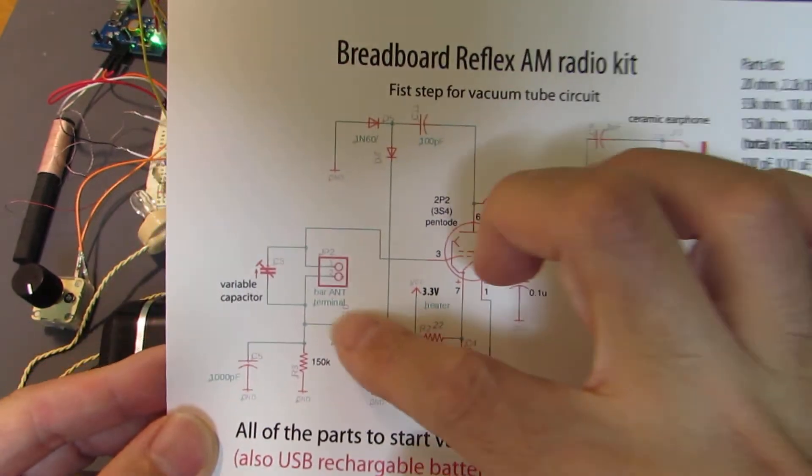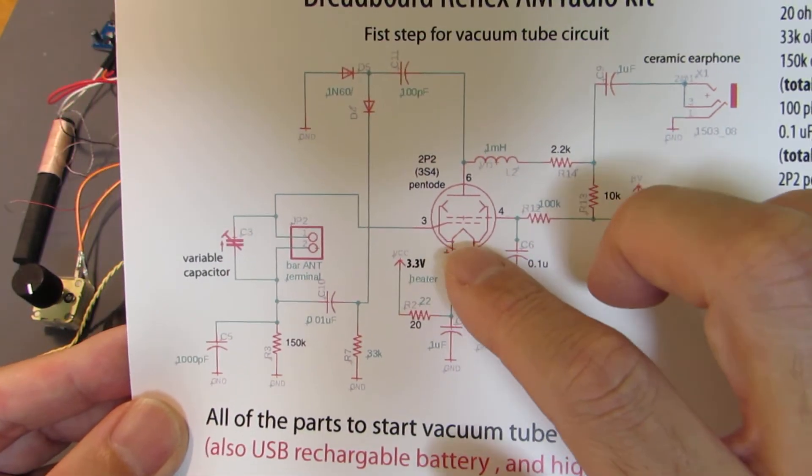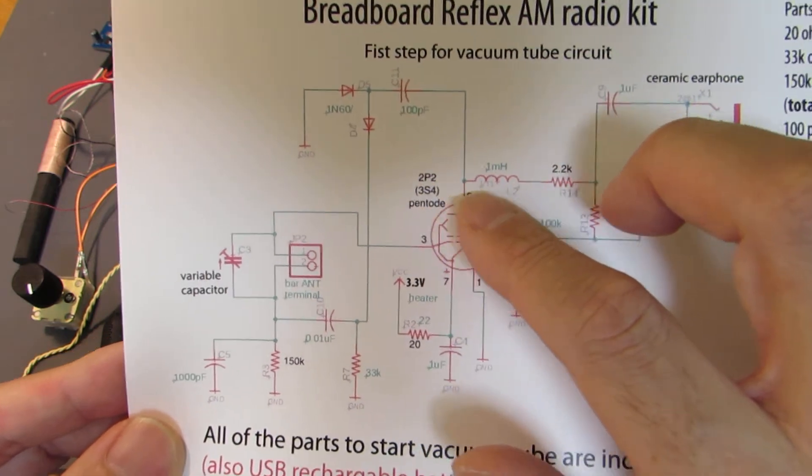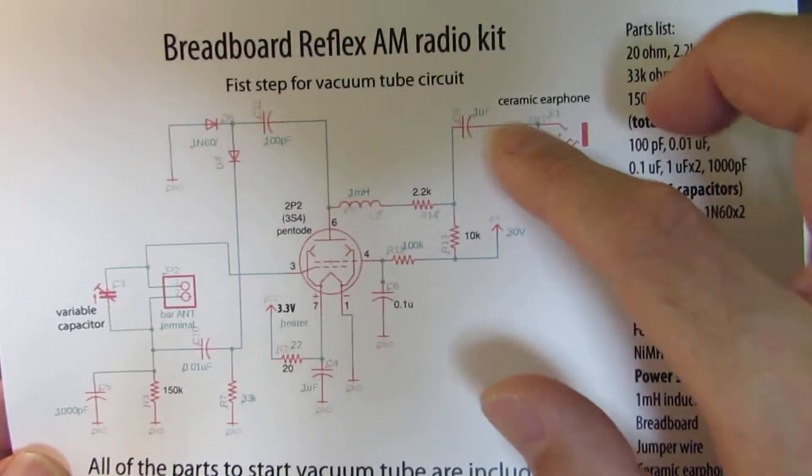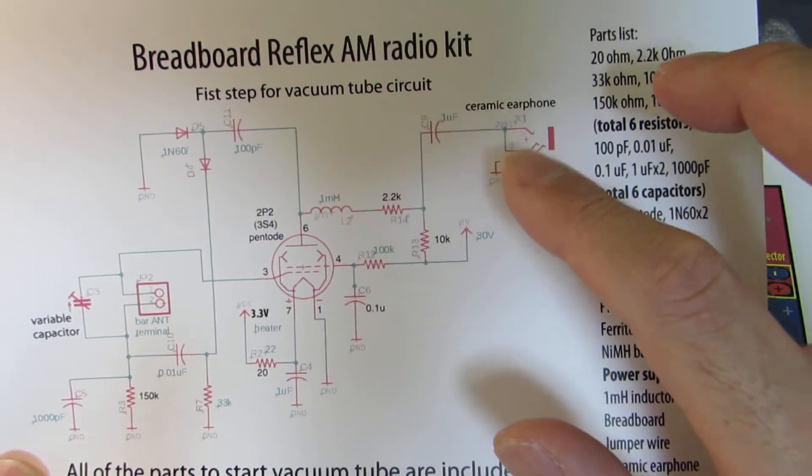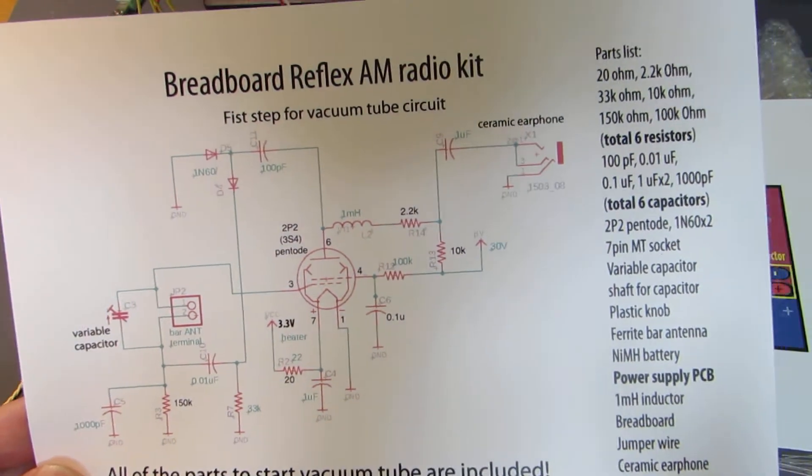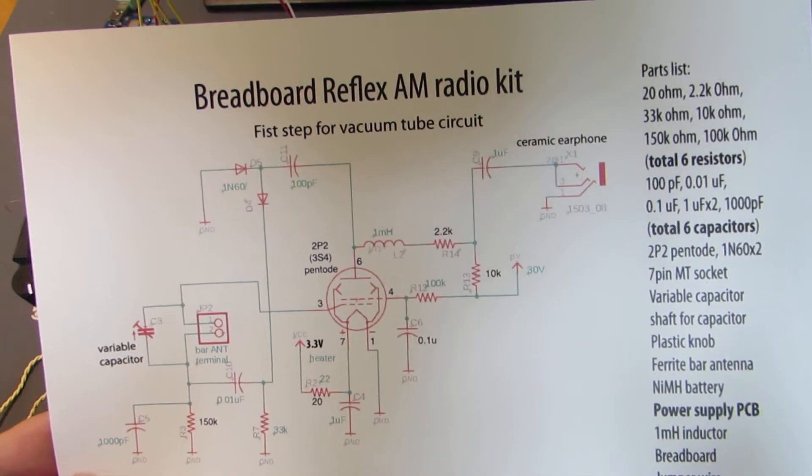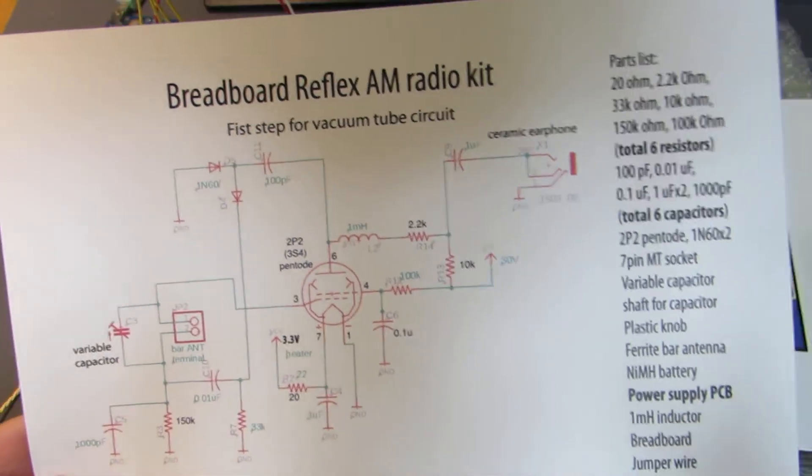And here is the circuit. It's basically a reflex circuit, utilizing the Pentode 2P2 with two diodes, and here is the earphone out. One of the headaches for the vacuum tube is to prepare the power supply, a high voltage power supply.